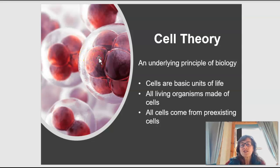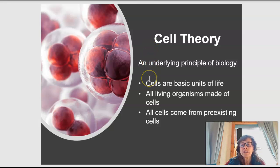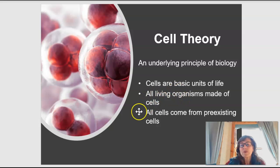All of this leads us to an underlying principle in biology called cell theory. Cells are the basic units of life; they make up all living things. Furthermore, all cells have to come from pre-existing cells — they don't spontaneously arrive. They have to be created from the original blueprints of cells themselves.